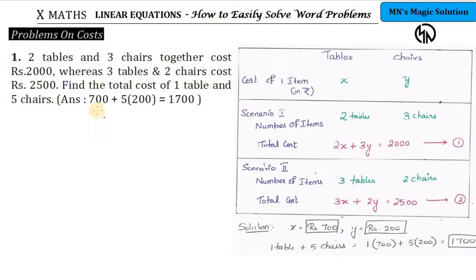Now let's see how we categorize these problems. We have problems based on cost, age, and other categories. We have one or two examples for each category. The first category is problems on cost.